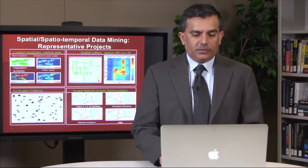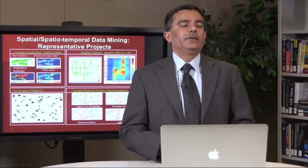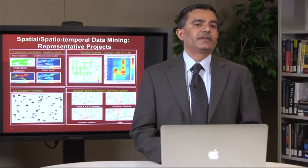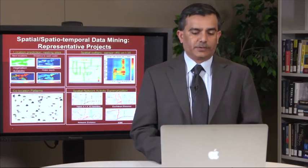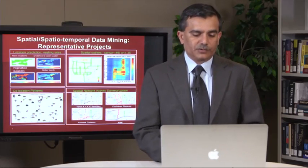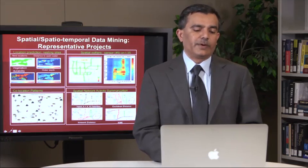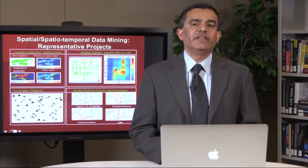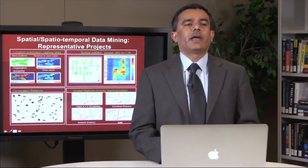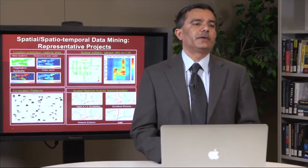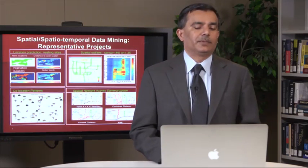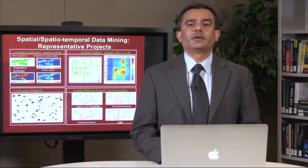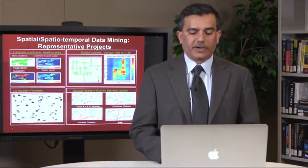Let me give you a few other examples of things going on in our group. First, let's revisit collocation. In collocation, you are given a set of features with several instances of those features on a map, and we look for pairs or triples of features that are co-located.